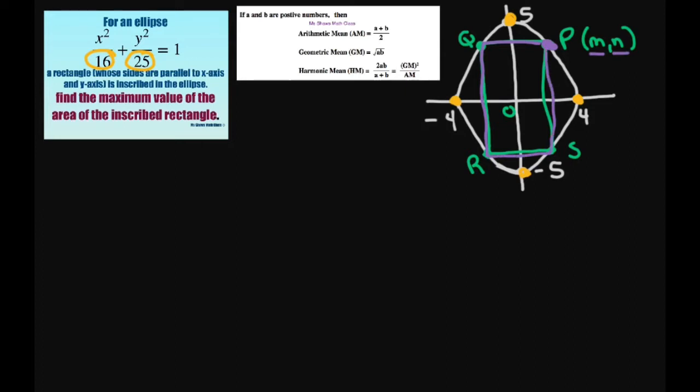So basically what we're going to use is the relationship between the arithmetic mean and geometric means. First, since we're going to do that, we're going to write our ellipse as m squared divided by 16 plus n squared divided by 25 equals 1.